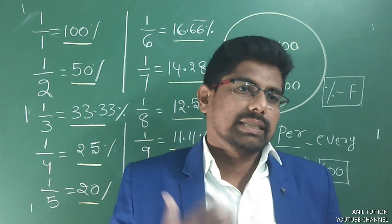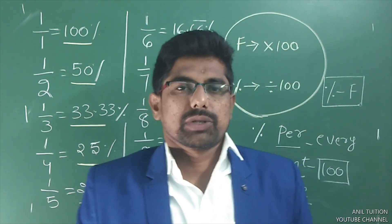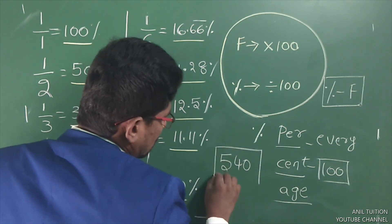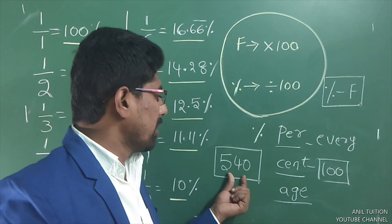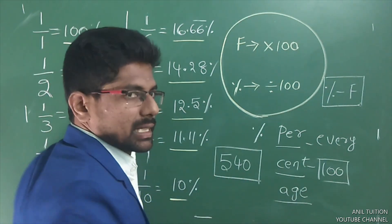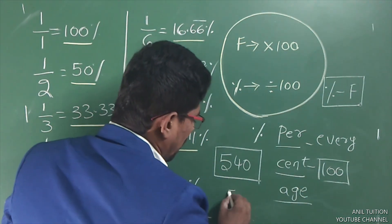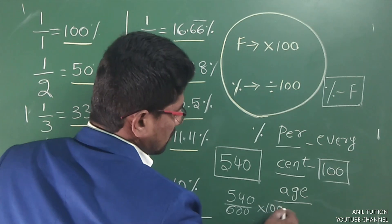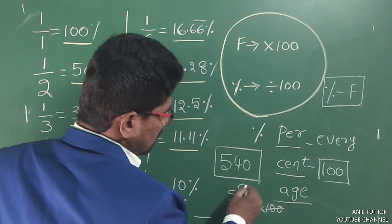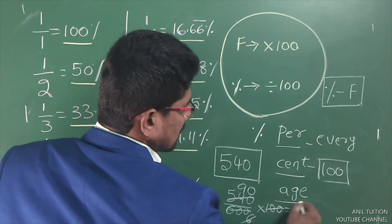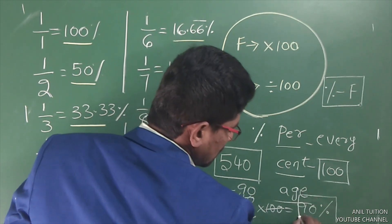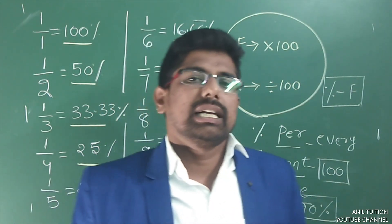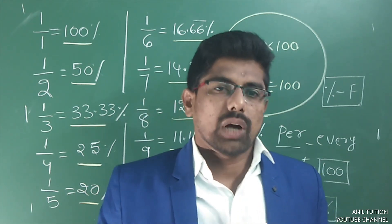For example, we have a 10th exam. We have 540 marks. So we calculate: 540 divided by total marks 600, into 100. That gives 90. So you have 90%.